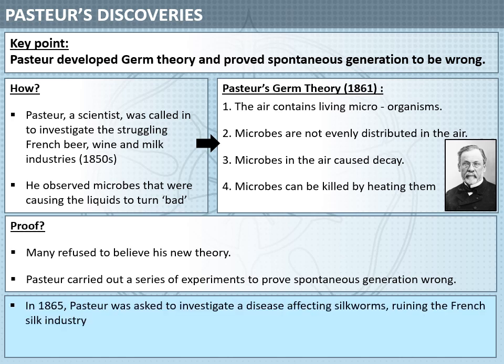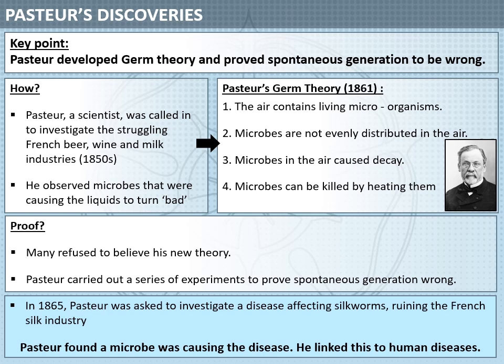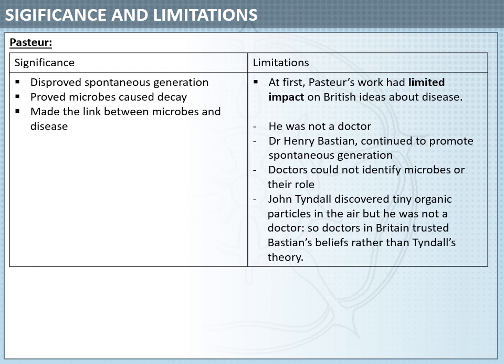So far this is all based on liquids. However, in 1865, Louis Pasteur is asked to investigate a disease affecting silkworms, which is therefore ruining the French silk industry. Pasteur finds a microbe that was causing this disease, and so he makes the link between microbes and human diseases. This is hugely significant — not only has he disproved spontaneous generation, he has proved that microbes cause decay and that microbes can cause diseases in animals.